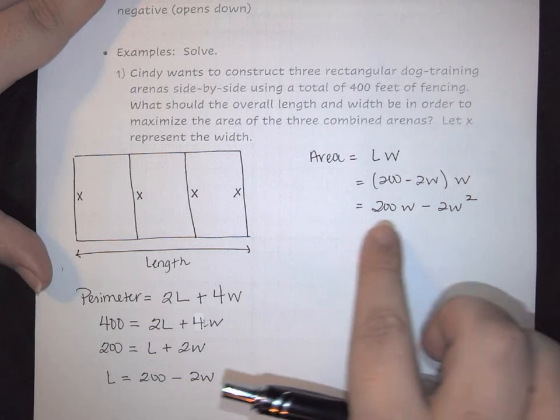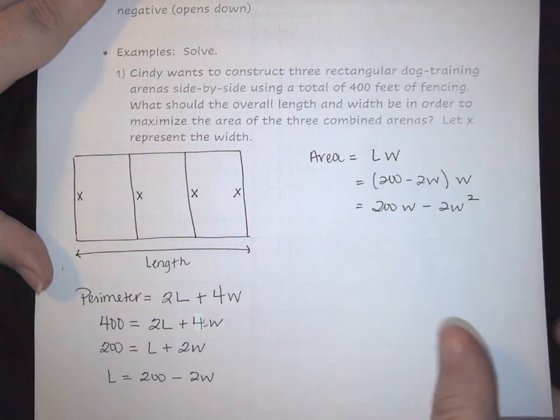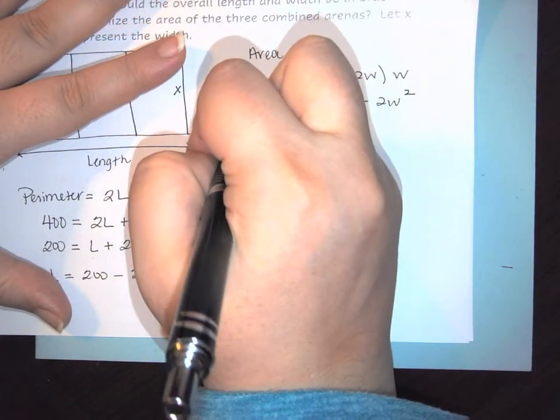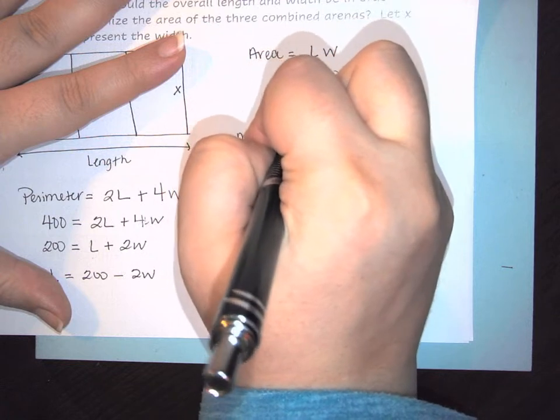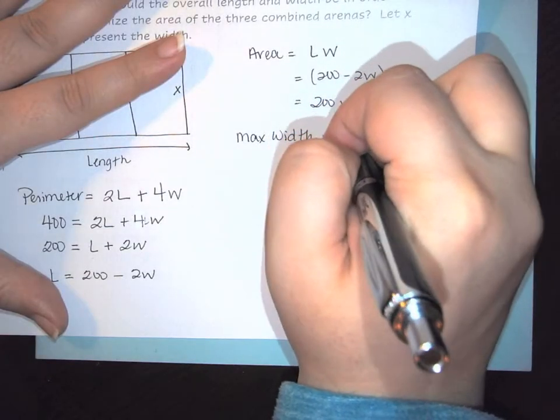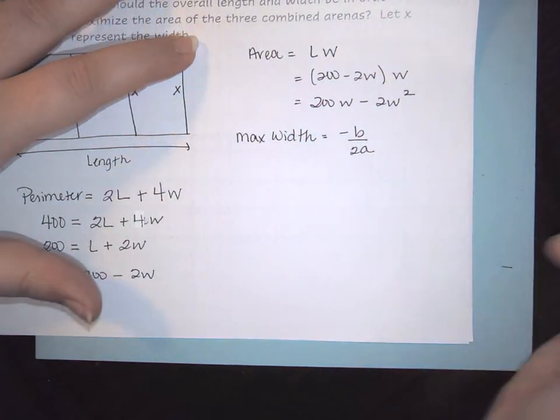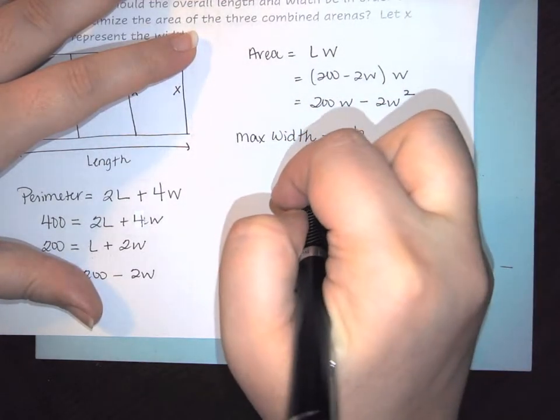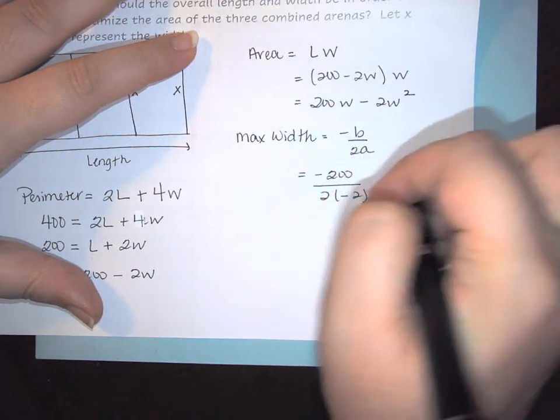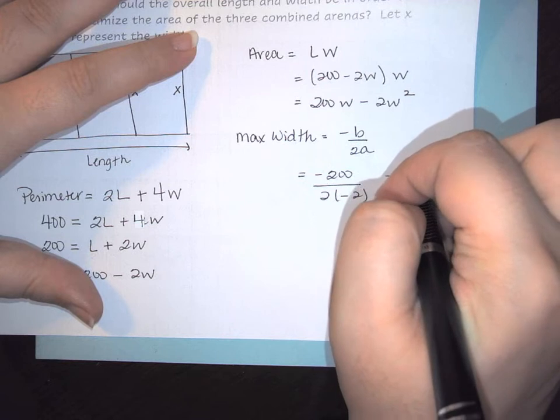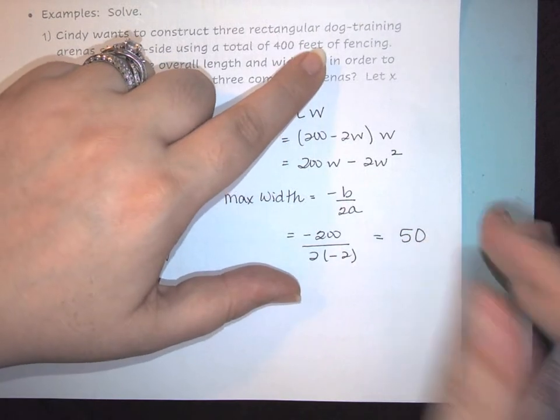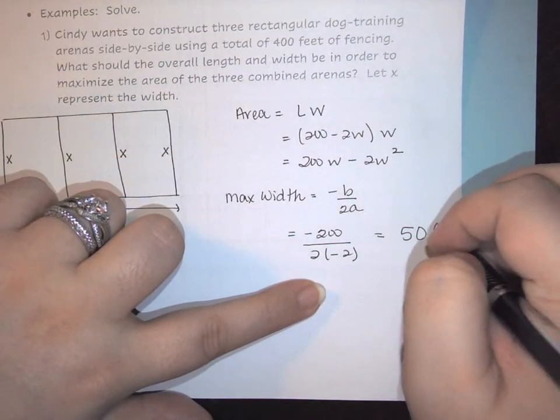If you notice this is a quadratic and this is where the vertex formula comes into play. So here in order to find your maximum width we're going to use the idea of negative b over 2a. And so in this case we would end up having negative 200 over 2 times negative 2, which in this instance is going to simplify to give us 50. Well in our problem we have 400 feet, so our max width is going to end up being 50 feet.